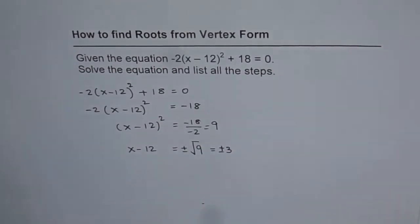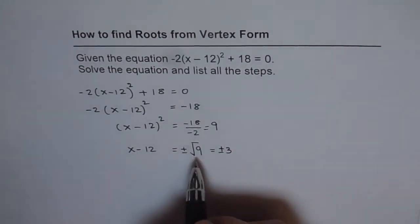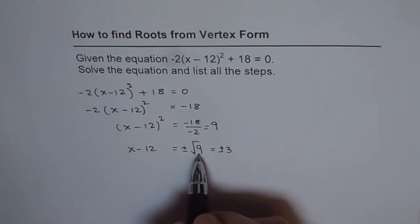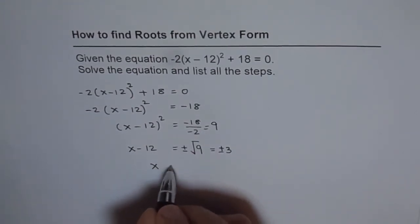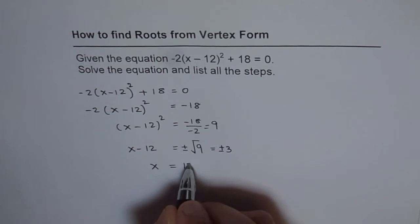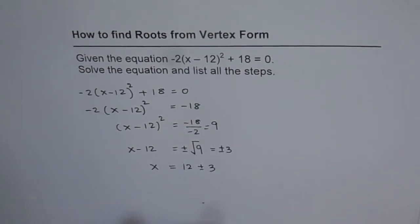It is not necessary that you always get a perfect square here. If you don't, leave it as a radical or square root. Now, you add 12 to both sides and you get x = 12 ± 3. That brings you two different solutions.